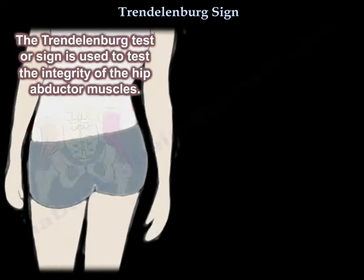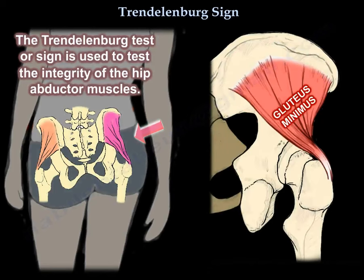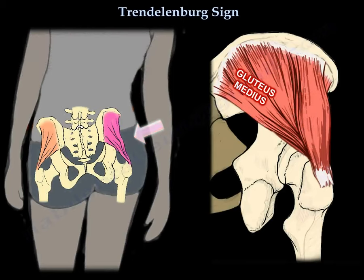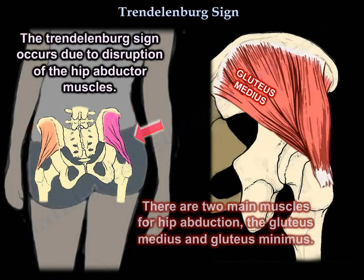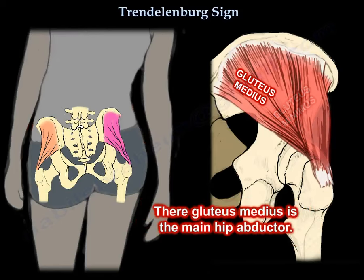The Trendelenburg test or sign is used to test the integrity of the hip abductor muscles. The Trendelenburg sign occurs due to disruption of the hip abductor muscles. There are two main muscles for hip abduction: the gluteus medius and gluteus minimus. The gluteus medius is the main hip abductor.